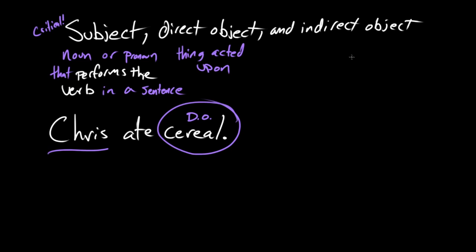So this seems like it would cover most interactions between objects and people. But then we have this other thing — indirect object. What's that about? So an indirect object is often signifying a recipient of something. It's like another thing in the sentence that might be acted upon, but it's being acted upon in a giving way.